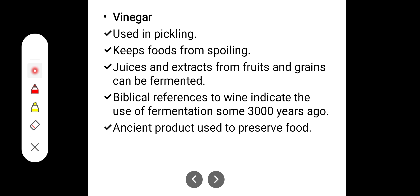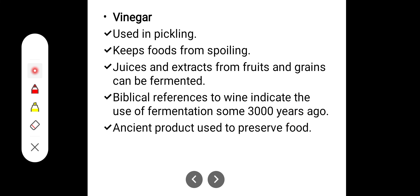Vinegar was used in pickling to keep food from spoiling. Juice and extract from fruits and grains can be fermented. Biblical references to wine indicate that the use of fermentation was there 3,000 years ago.